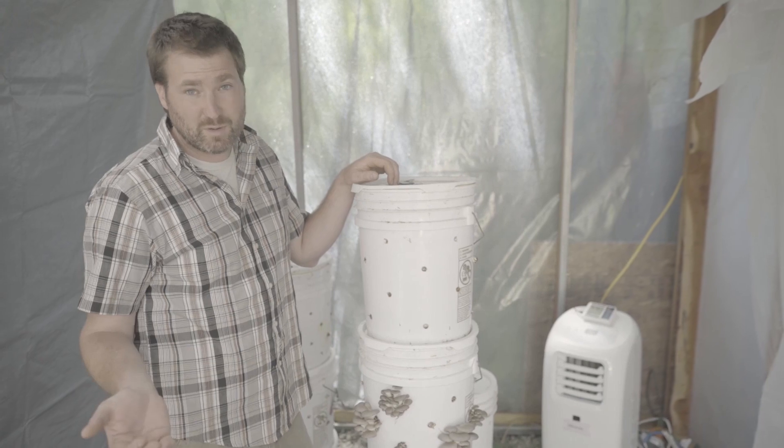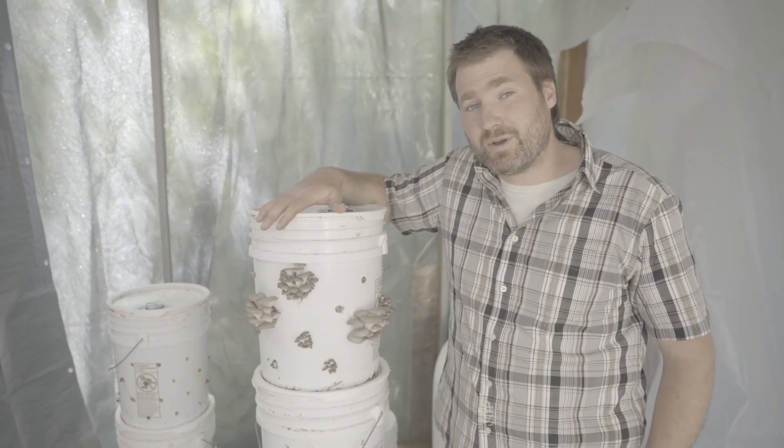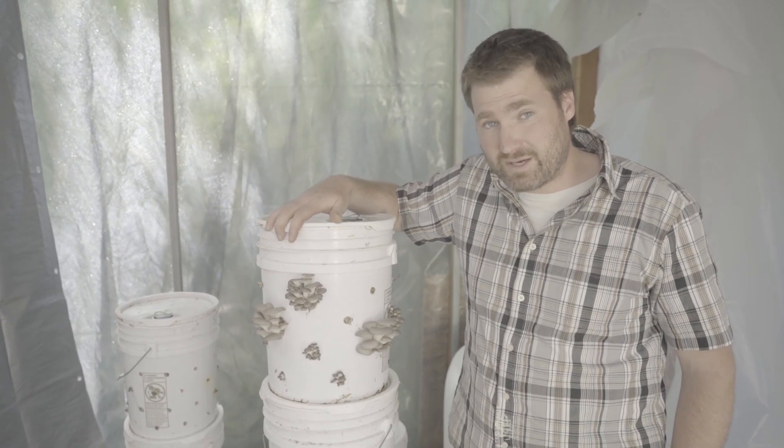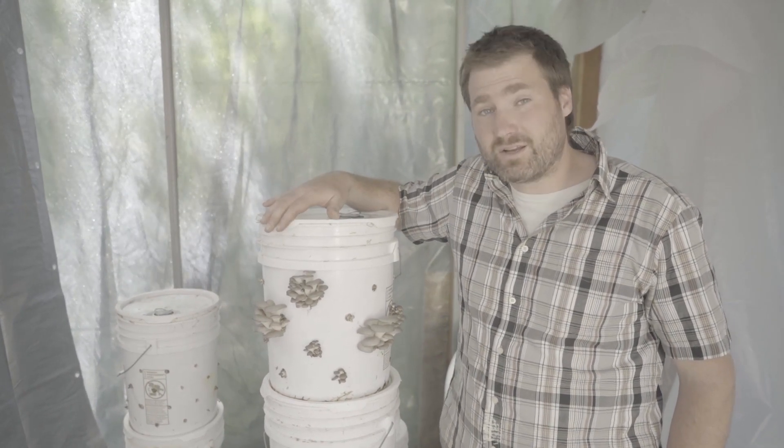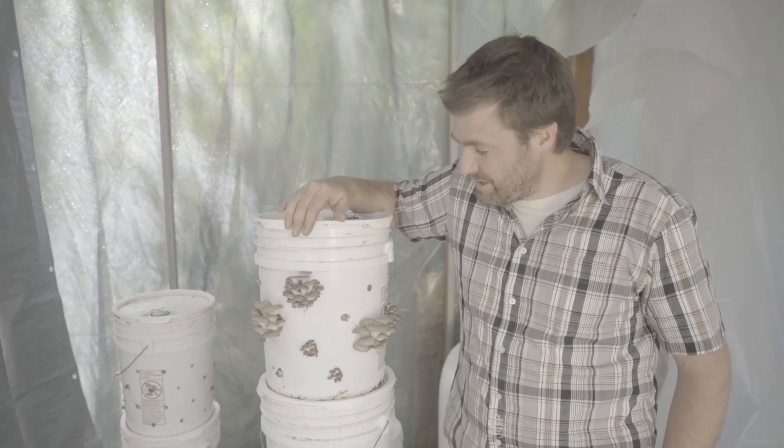As we talked about, one 40-pound straw bale will do about five or six of these buckets and about four weeks after inoculation is when you'll get your first flush if you keep all the parameters correct.